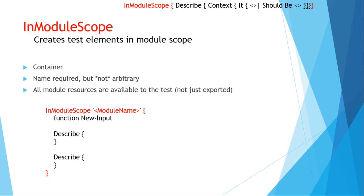InModuleScope is an uber container just for testing modules. It creates all of the test elements in module scope, which means the test has access to all elements of the module including those that are not exported — like variables and helper functions you need to mock. When you're testing a module, this is almost a required thing to use. This one has a required name, but the name is not arbitrary — it must match the actual module name.